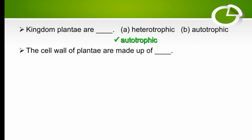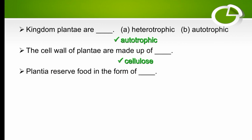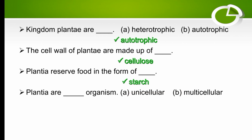The cell wall of Plantae is made up of cellulose. Plantae store reserve food in the form of starch. Plantae are multicellular organisms — the right option is multicellular.